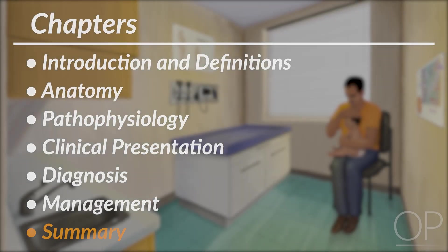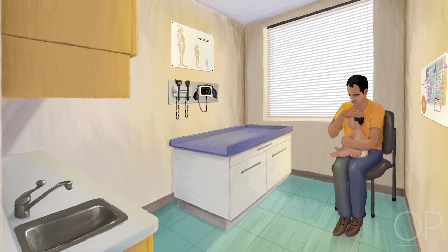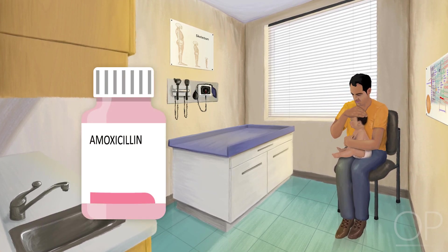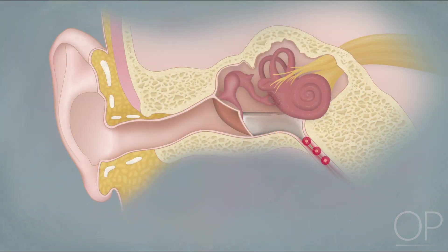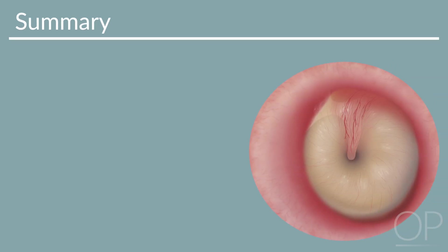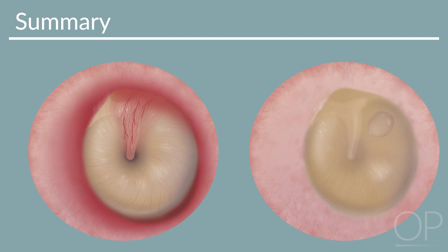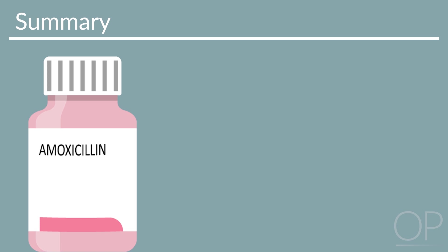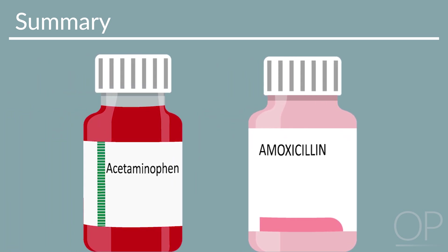In summary, acute otitis media is a common reason for pediatric sick visits and antibiotic prescriptions. Its incidence is higher in the fall and winter months and is usually preceded by a viral upper respiratory infection predisposing to infection of the middle ear space. The diagnosis is dependent on seeing middle ear effusion and a bulging tympanic membrane, or other signs of acute inflammation. This must be distinguished from otitis media with effusion, as management may require antibiotics with high-dose amoxicillin being the first-line agent. Proper analgesia is also critical. Thank you for watching this video on Acute Otitis Media.